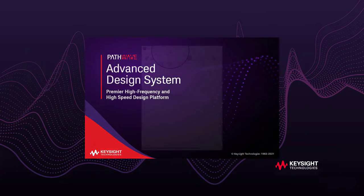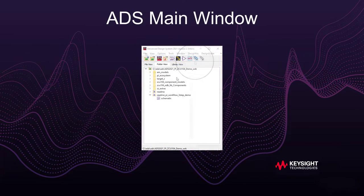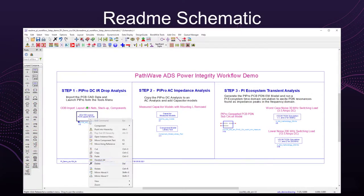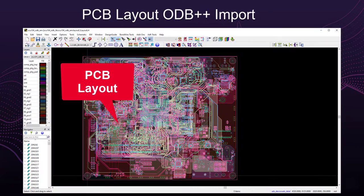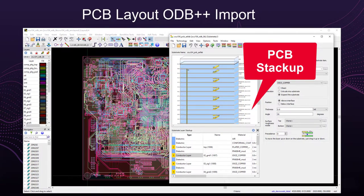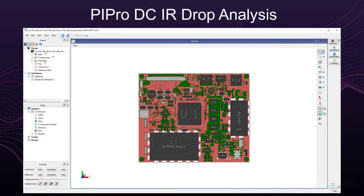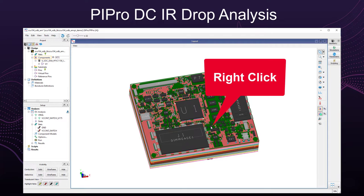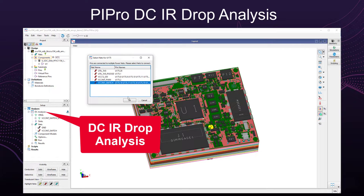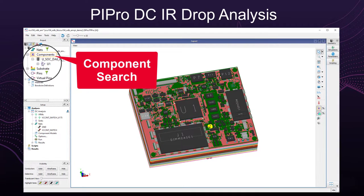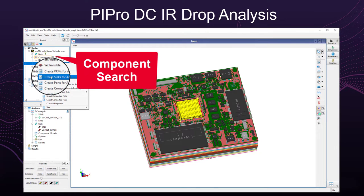Opening the ZCU-104 example workspace shows the ADS main window and a README schematic with the power integrity workflow. This workflow starts with importing the ODB++ PCB CAD data including the stack-up and then opening ADS PI Pro to run a DC IR drop analysis. Setup is as simple as right-clicking on the VRM and adding the component to the DC IR drop analysis. Search tools also make it easy to find components like the FPGA sync U1 and add it to the analysis.